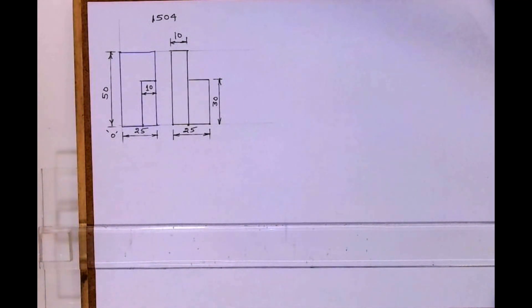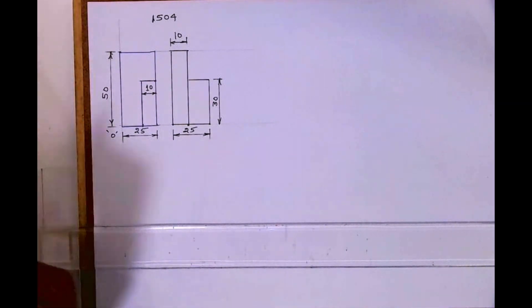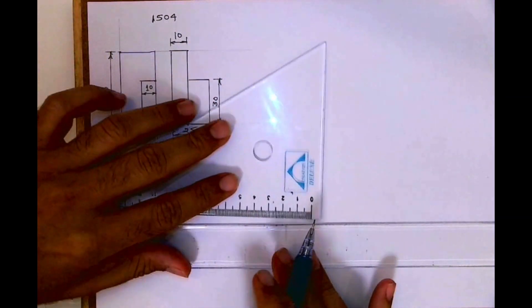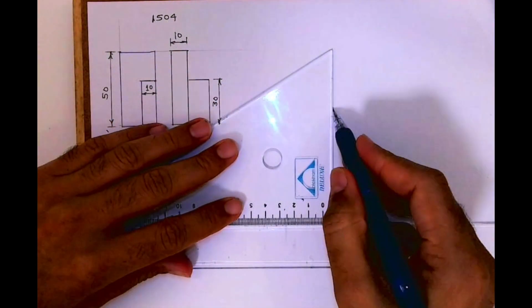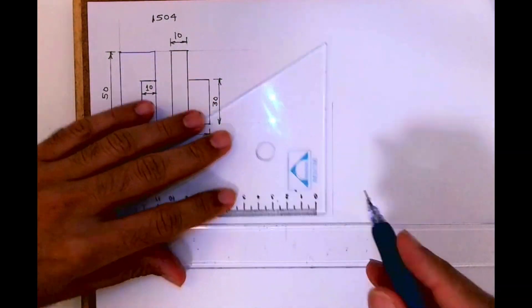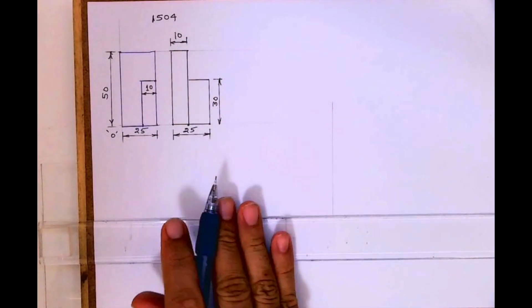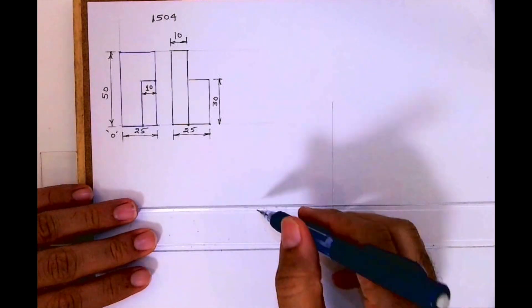Welcome to technical drawing. Today we'll see this is an isometric. So first we will draw the layout — we'll draw a vertical and horizontal line.